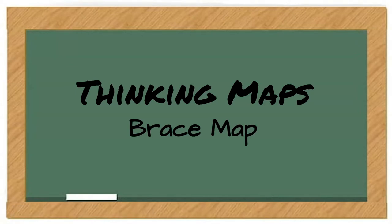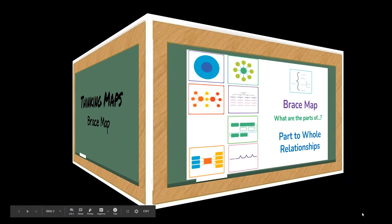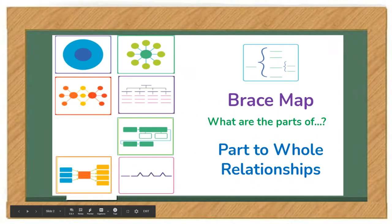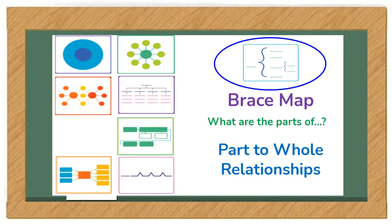This is my Thinking Map Screencastify and we're going to focus on Brace Map today. The Brace Map is one of eight Thinking Maps. As you can see right there, it focuses on the part-to-whole or the whole-to-part relationship.